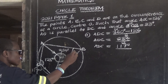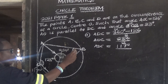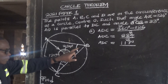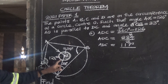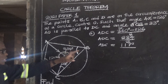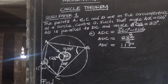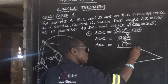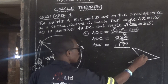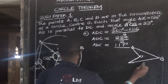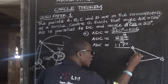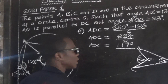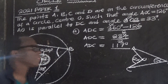So for us to find this angle, we assume we don't know it and use another method. There is a property which states: the angle at the center is twice the angle at the circumference. So if this angle at the center is 2X, the angle at the circumference becomes X.